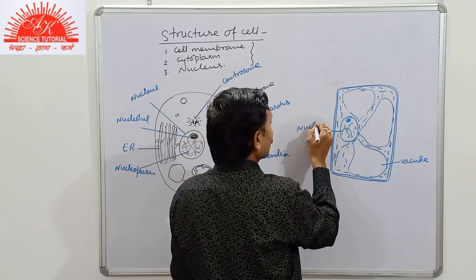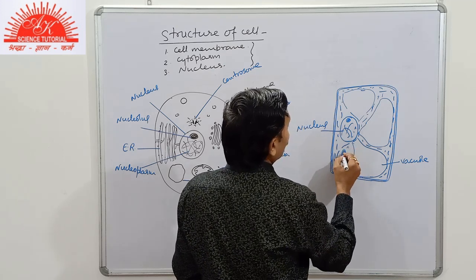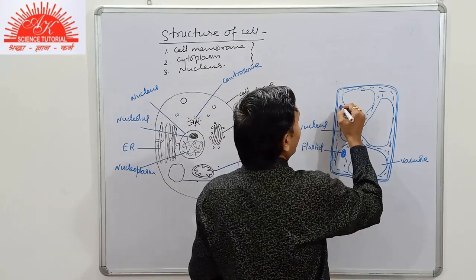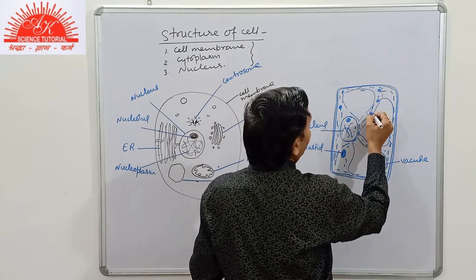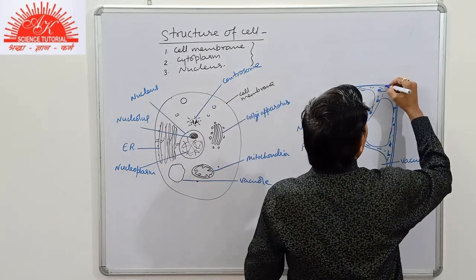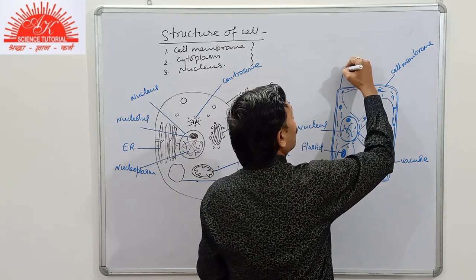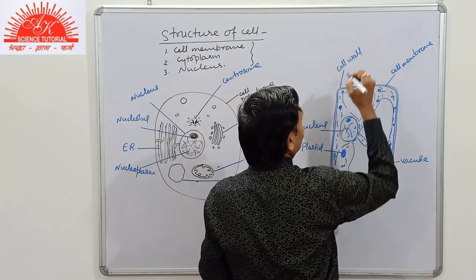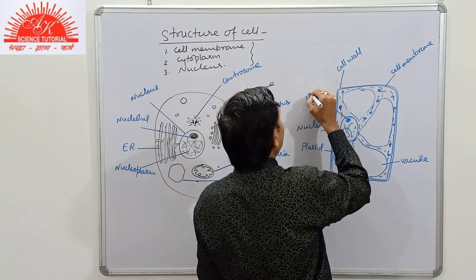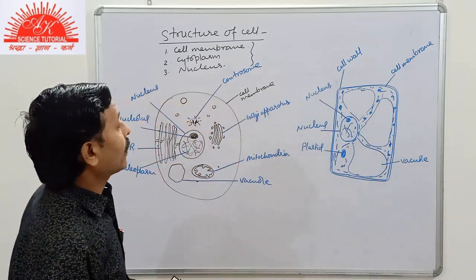In the plant cell diagram: this is the nucleus. There are also membrane-bound structures — plastids, which may be chloroplast, leucoplast, or chromoplast — and other structures like mitochondria. Here is the cell membrane, on the outer side there is the cell wall, here is the nucleus, here is the nucleolus, this is the plastid, this is the vacuole. This is the basic pattern of the plant cell.